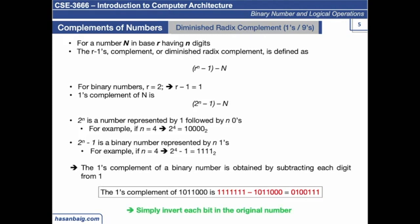To summarize: to calculate one's complement of a binary number, subtract each digit from one, or simply invert all the bits in the original number. If you are given a task to calculate nine's complement, subtract each digit of the decimal number from nine. If given a task to calculate one's complement, subtract each digit from one. This is what we call the diminished radix complement, or r minus one's complement method.